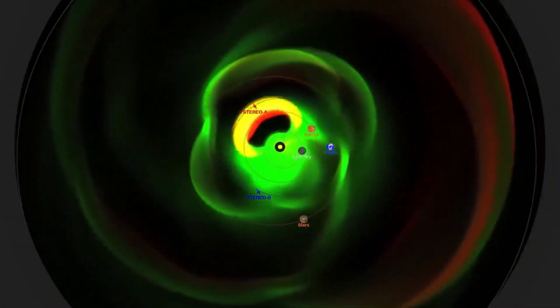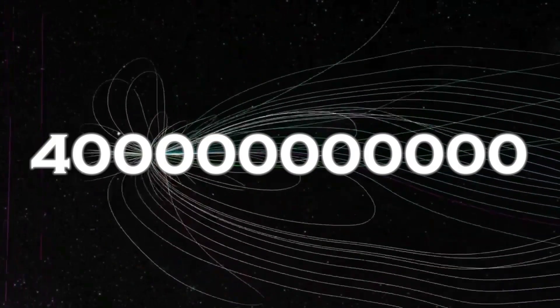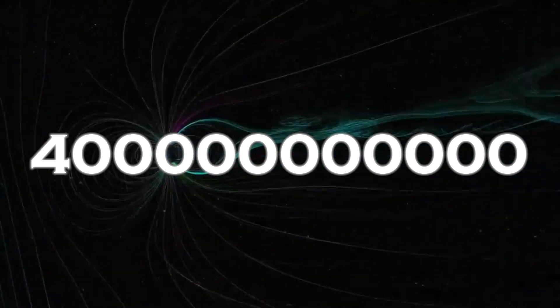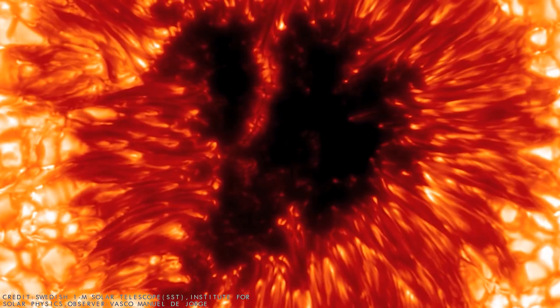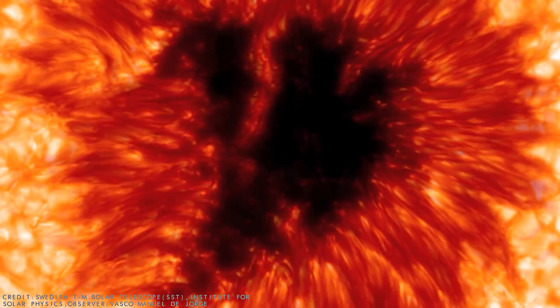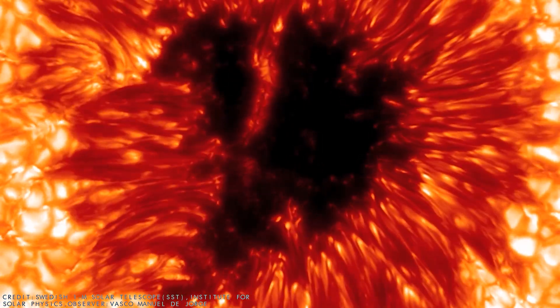Betelgeuse's corona surprised scientists by ejecting an amount of mass 400 billion times greater than the average coronal mass ejection. This cloud of hot gas released by the star temporarily covered some of its light, leading to the unusual dimming observed.